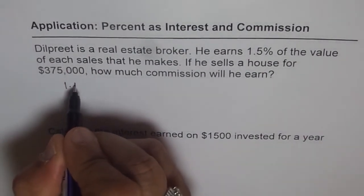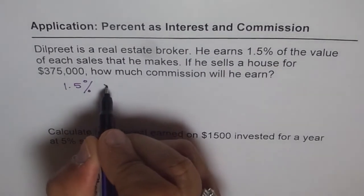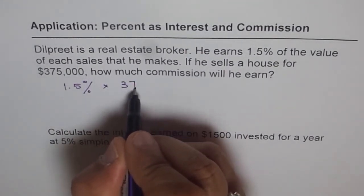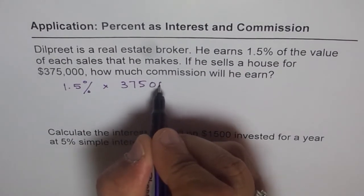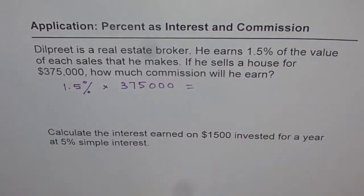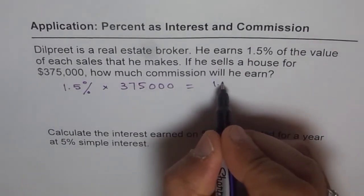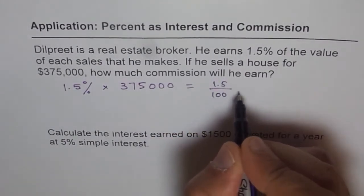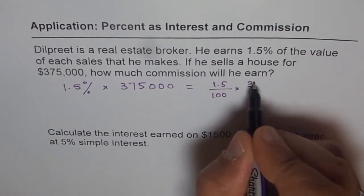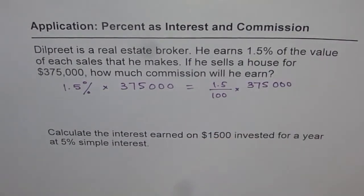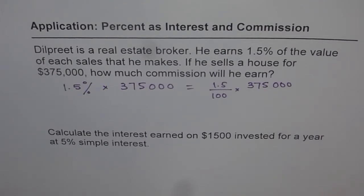We just need to calculate 1.5% of — 'of' means multiply — and the amount is $375,000. So 1.5 over 100 times $375,000. Use your calculator and get the answer: 1.5 times $375,000 divided by 100, and you get 5625.